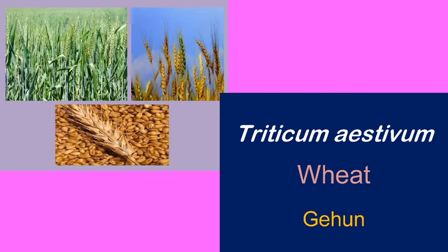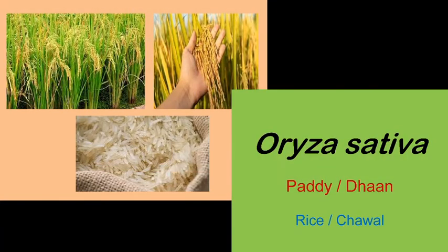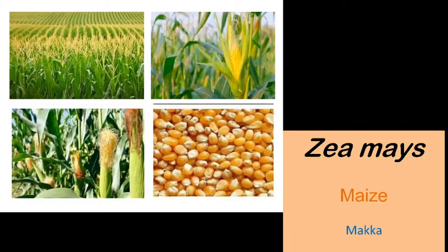The second plant is rice or paddy, known as Oryza sativa. It has approximately 82,700 varieties in India alone, and out of those, more than 500 are grown in Bengal.